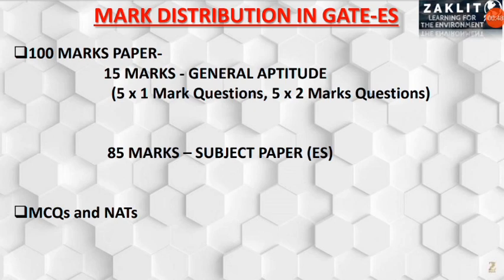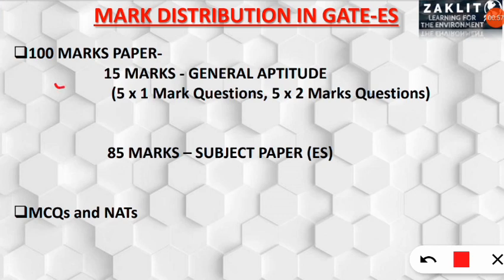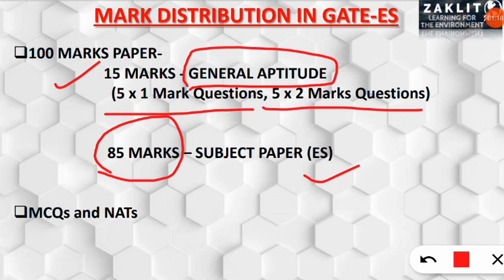First, let's wrap up the mark distribution in GATE. The GATE paper is of 100 marks. 15 marks are given for the General Aptitude section — five one-mark questions and five two-mark questions. The subject paper, which is Environmental Science and Engineering, carries 84 marks. This information is available on the GATE official website.